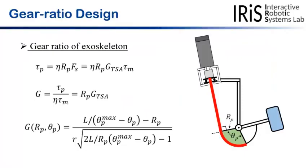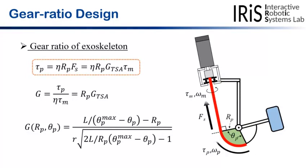In order to calculate the achievable torque and angular velocity of the TSA-based exoskeleton, the gear ratio between rotor and pulley rotation was taken into account. Assuming that the generated force on the twisted string FS is converted into pulley torque tau P with non-ideal transmission efficiency, the gear ratio can be obtained simply by multiplying the transmission ratio of TSA with the pulley radius RP.